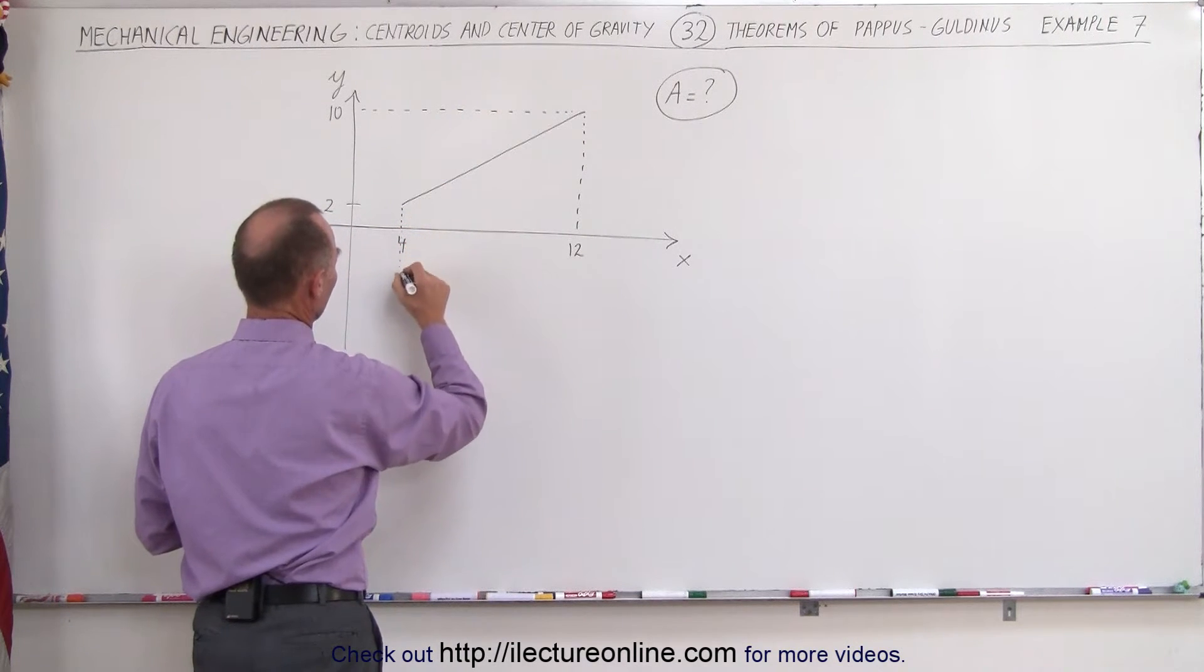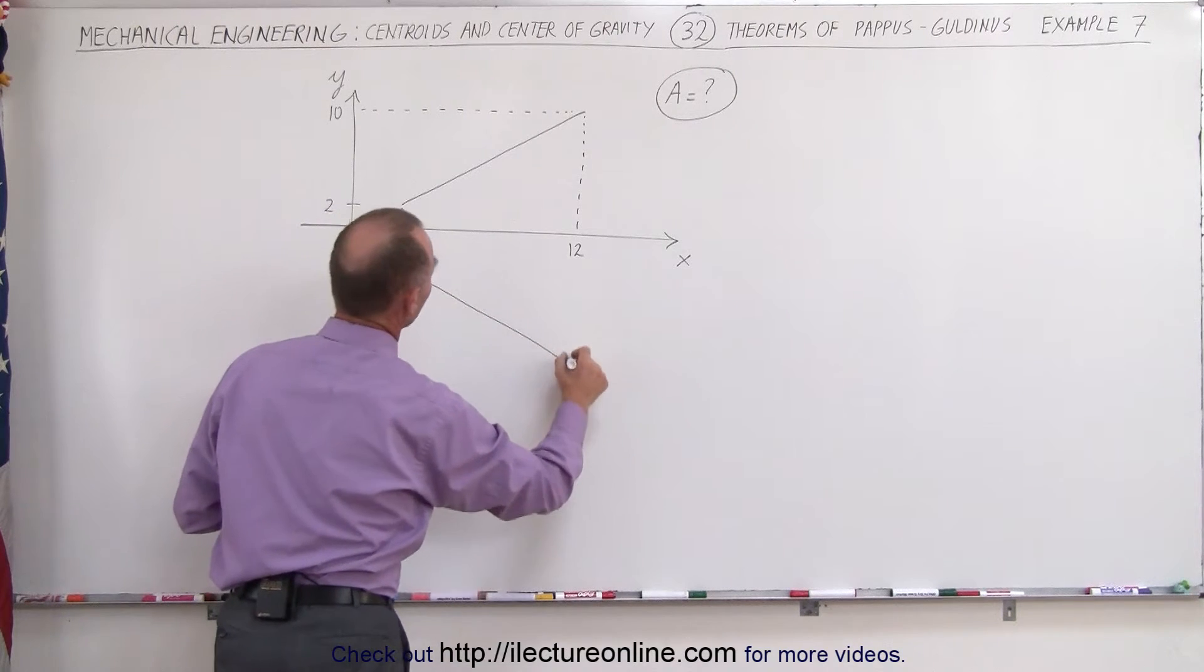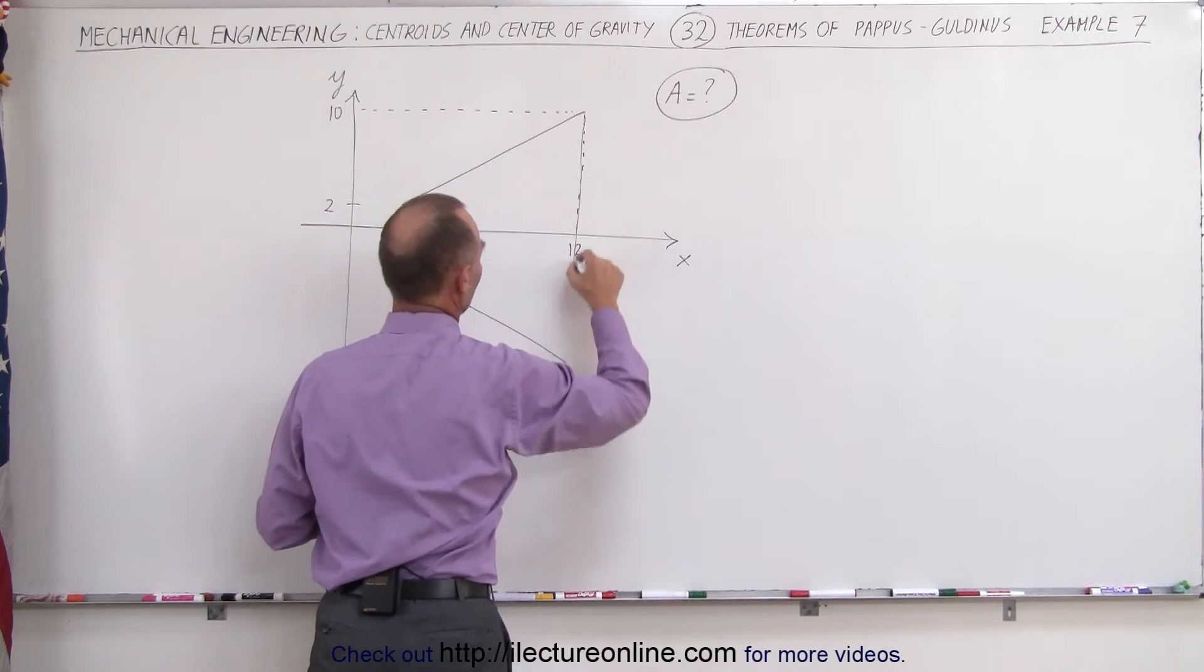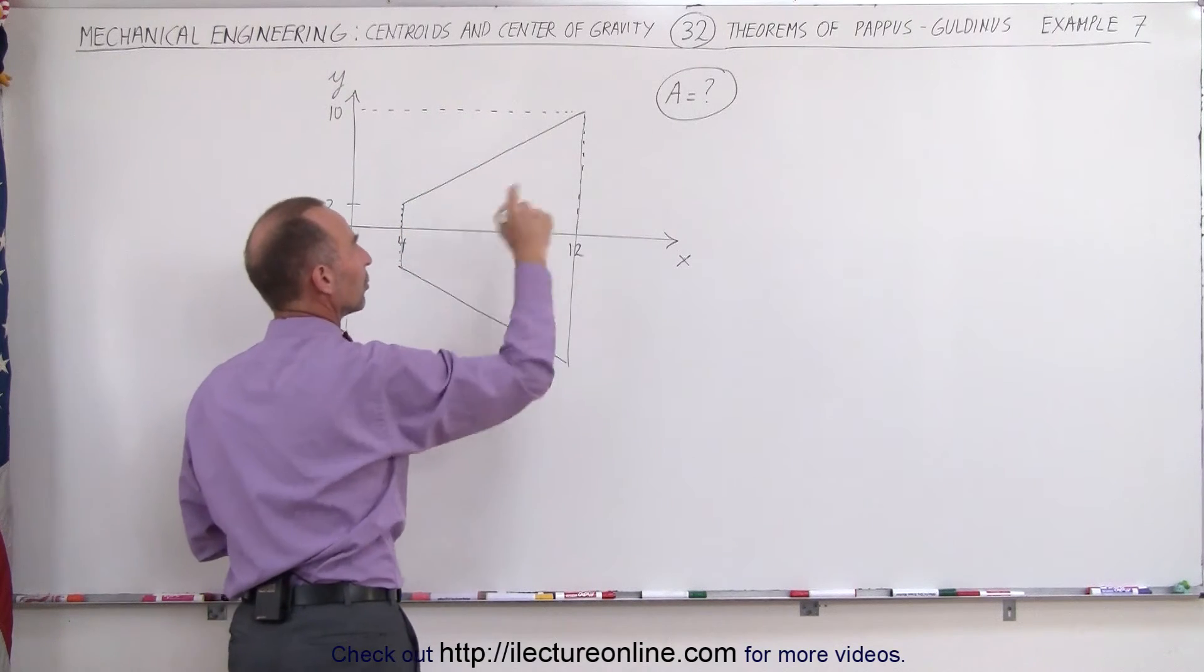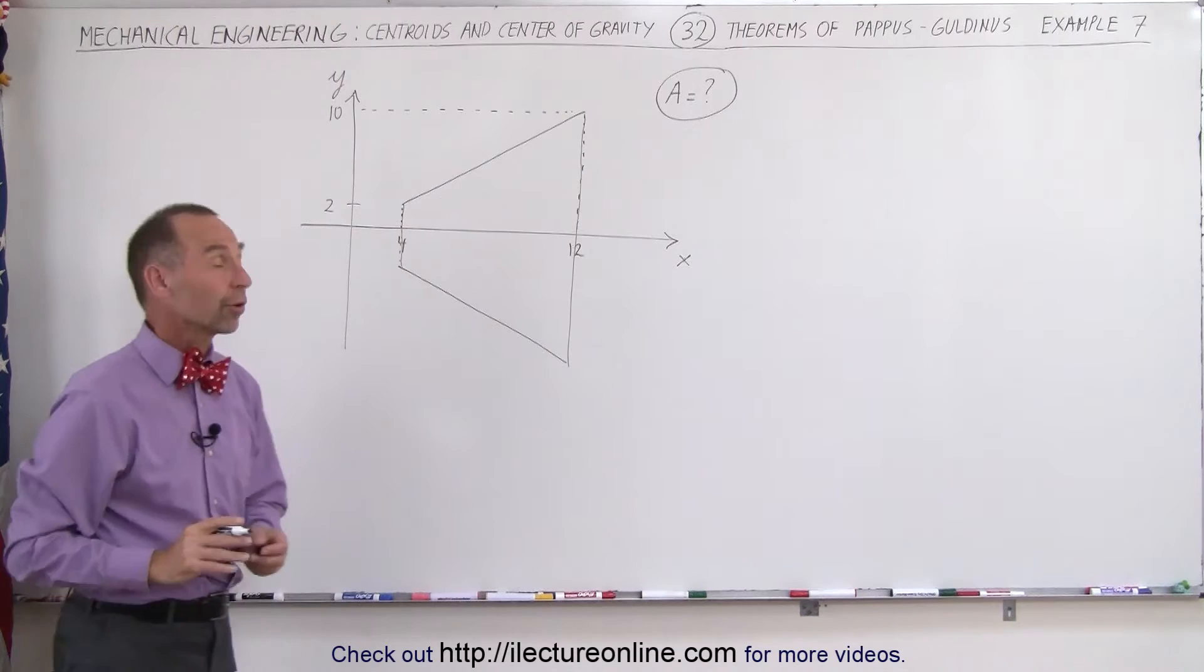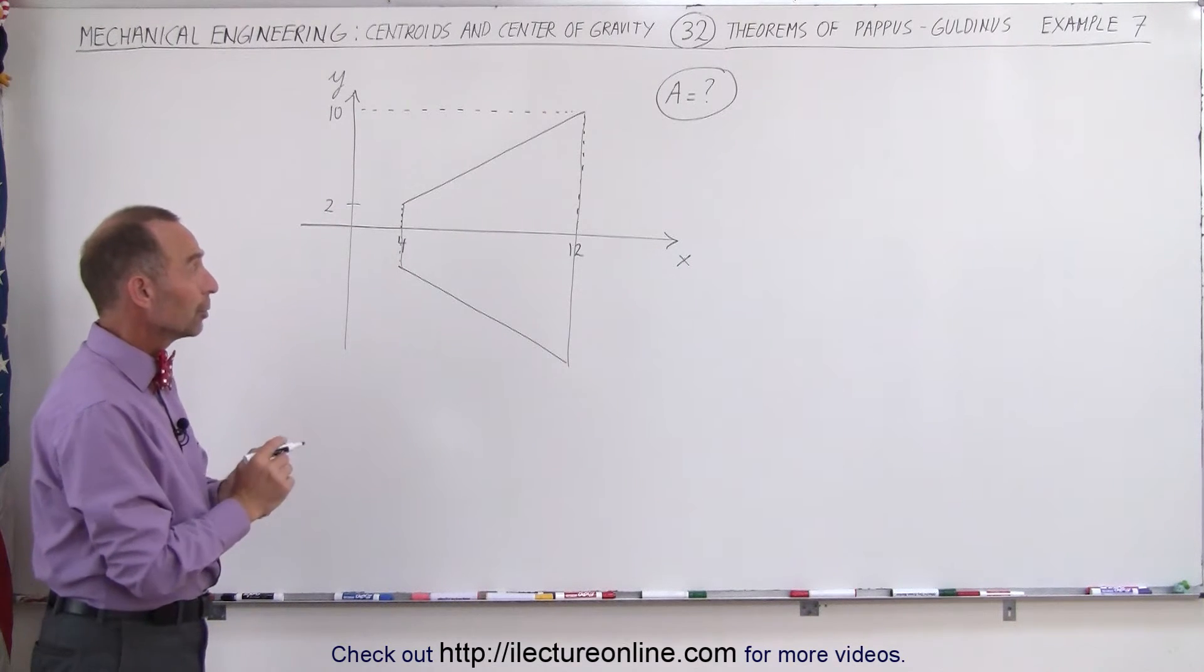When we do that we get something that looks like a truncated cone. So that goes down here this way. That's what the cone would look like. It now would have a surface area. We're trying to find that surface area of that truncated cone. How do we do that?